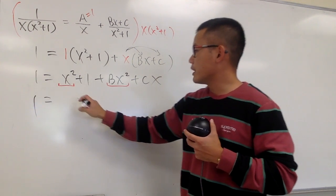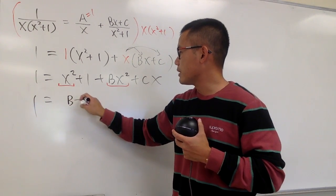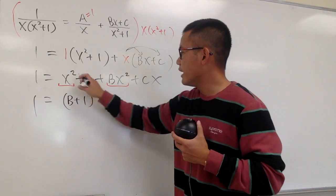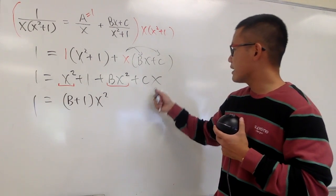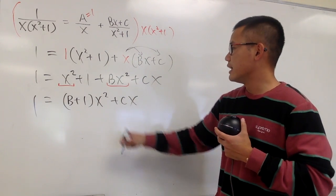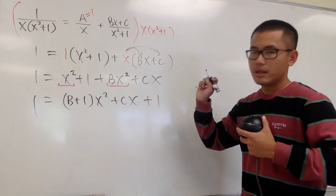x squared, bx squared, we can put down this as b plus 1, and then x squared, and then the x term just plus cx, and then we have this 1 right here, plus 1.